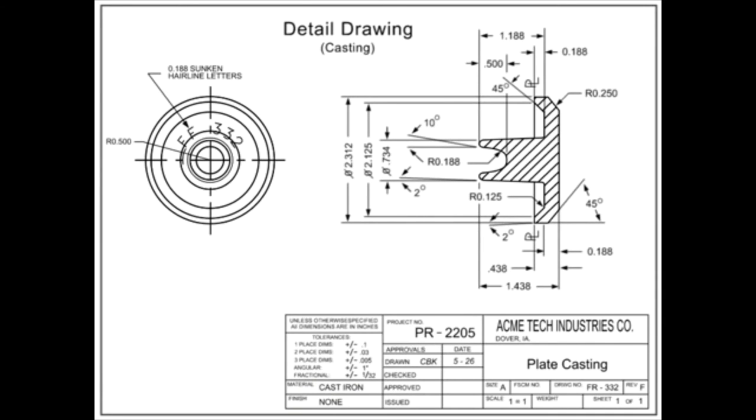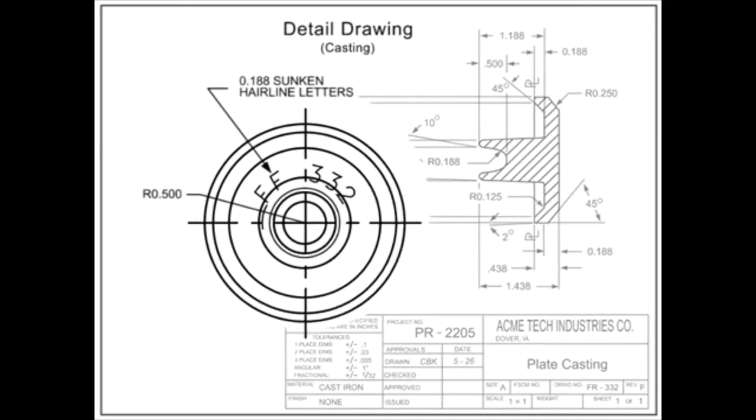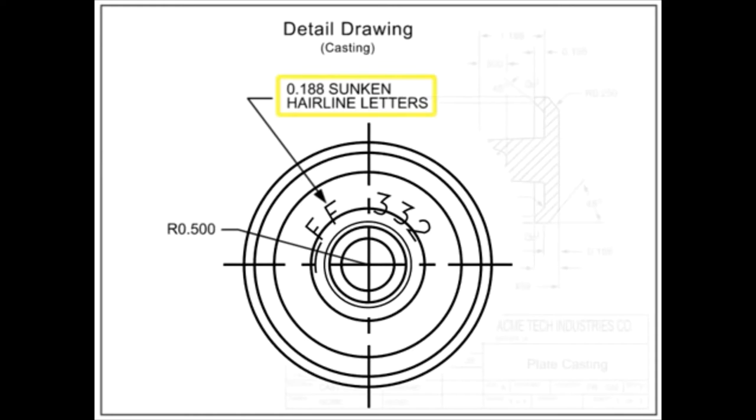A critical part of any configuration control process is adequate identification of manufactured parts. Most castings have their part numbers permanently cast into the part.